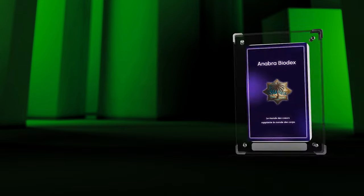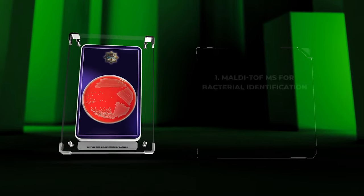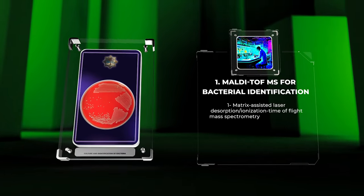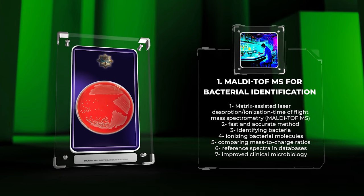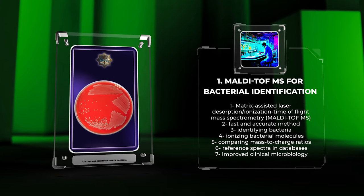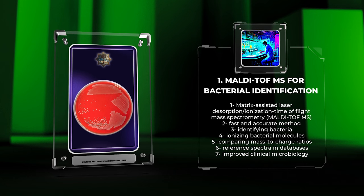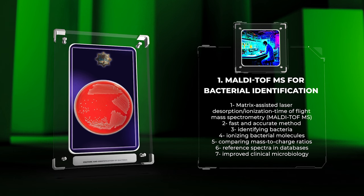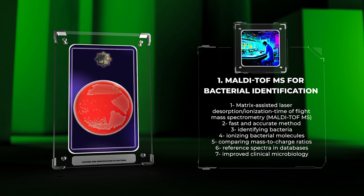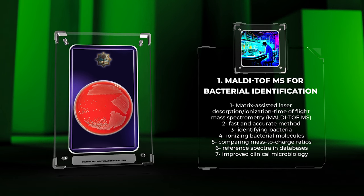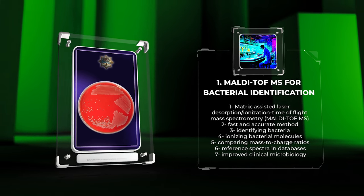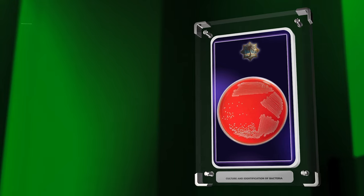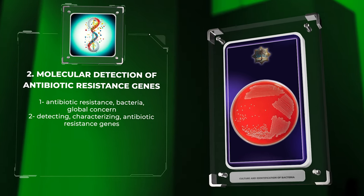Matrix-assisted laser desorption/ionization time-of-flight mass spectrometry, MALDI-TOF-MS, is a fast and accurate method for identifying bacteria. It involves ionizing bacterial molecules and comparing their mass-to-charge ratios to reference spectra in databases. This technique has greatly improved clinical microbiology.